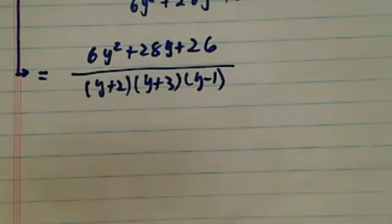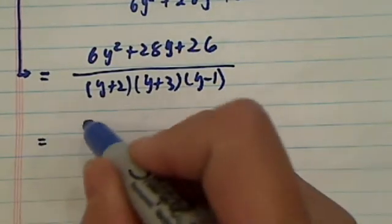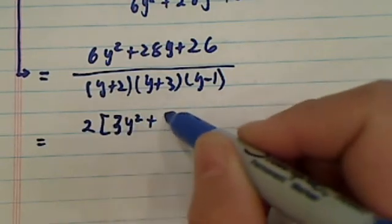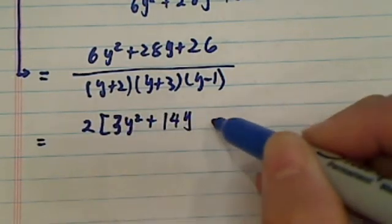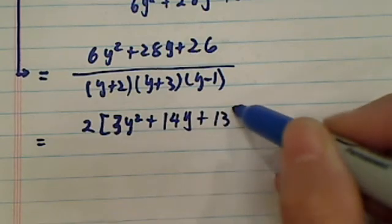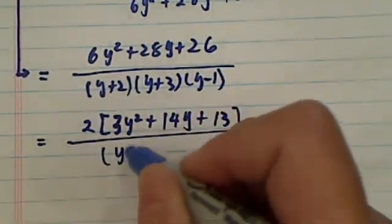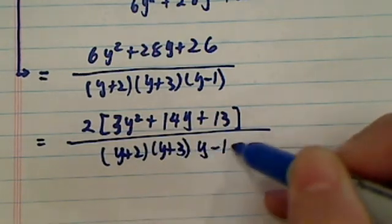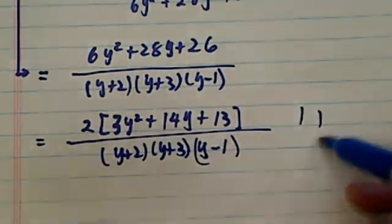Let's take the 2 out, so I have 3y squared plus 14y plus 13 over (y plus 2)(y plus 3)(y minus 1). All right, have a confident day.